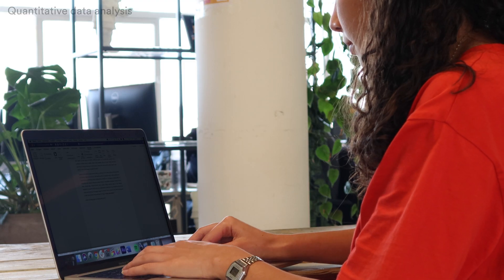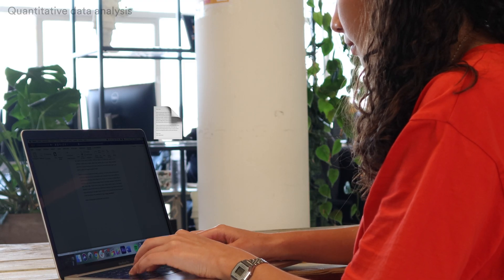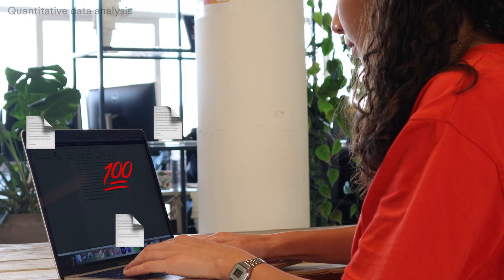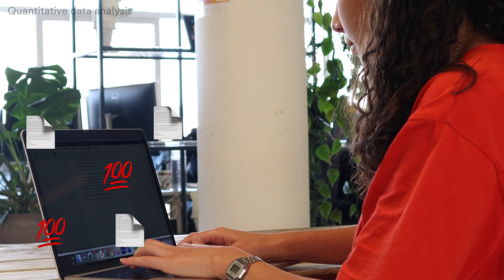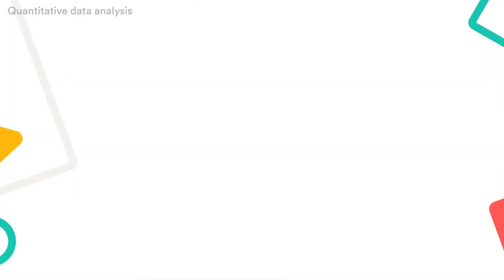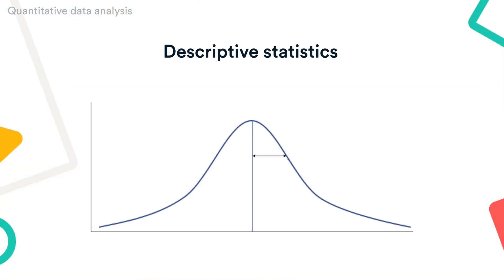For example, if you're collecting data on students' test scores, you'll probably want to calculate descriptive statistics like the mean, which describes the average score, and the standard deviation, which describes the variability of the scores.